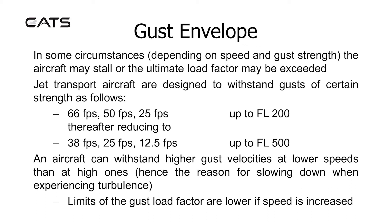Jet transport aircraft are designed to withstand gusts of certain strengths: 66, 50 and 25 feet per second up to flight level 200, thereafter reducing to 38, 25 and 12.5 feet per second up to flight level 500. An aircraft can withstand higher gust velocities at lower speeds than at high ones — hence the reason for slowing down when experiencing turbulence.